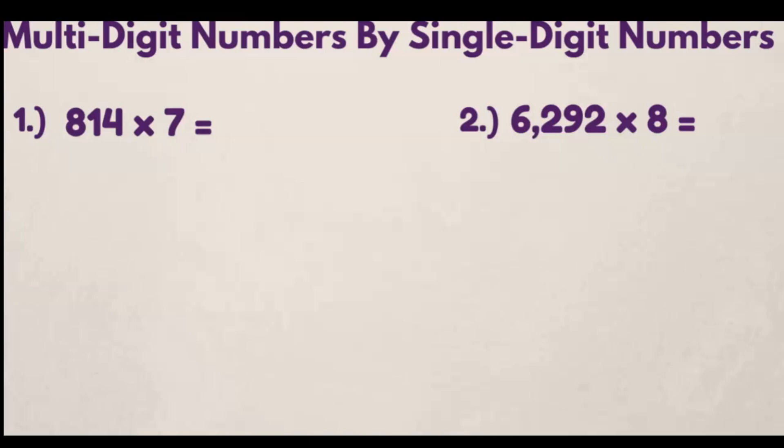So when multiplying a multi-digit number times a single-digit number, the first thing we want to do is set the problem up correctly. And what I mean by that is we're going to put our larger number on top with the smaller number on the bottom.